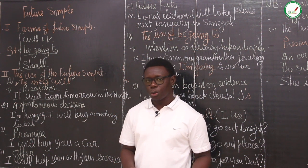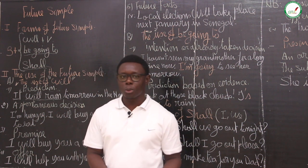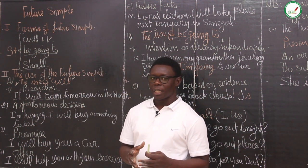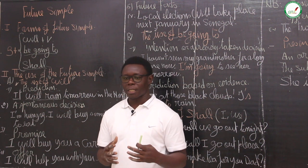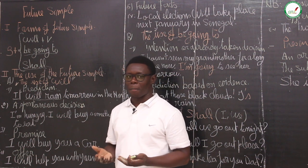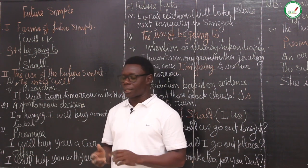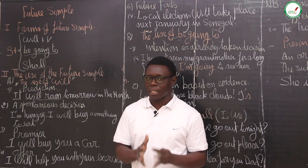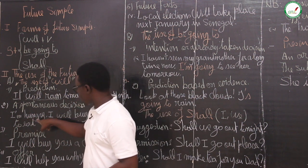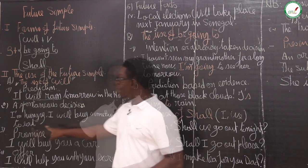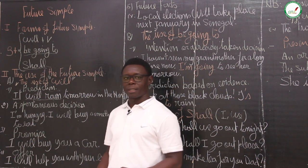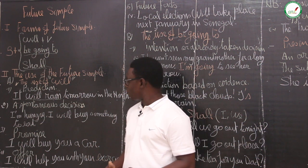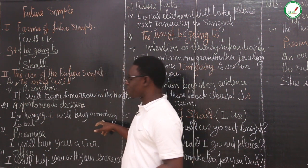We can also use the future simple to talk about a spontaneous decision — the decision we take at the moment we speak, when some idea comes into our mind that we can act on in the future. This spontaneous decision is not planned before; you decide at the moment you speak. For example, you say: 'I'm hungry, I will buy something to eat.' The decision is taken at the moment you speak.